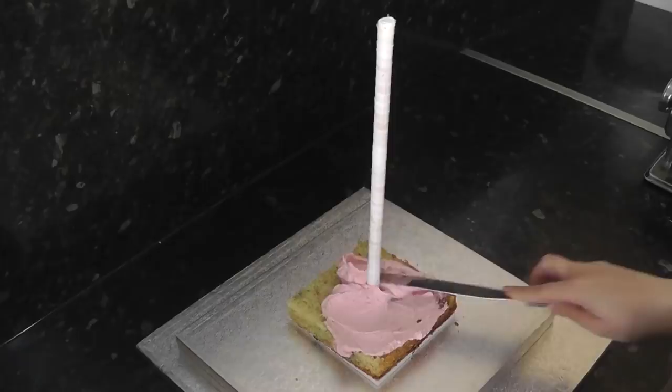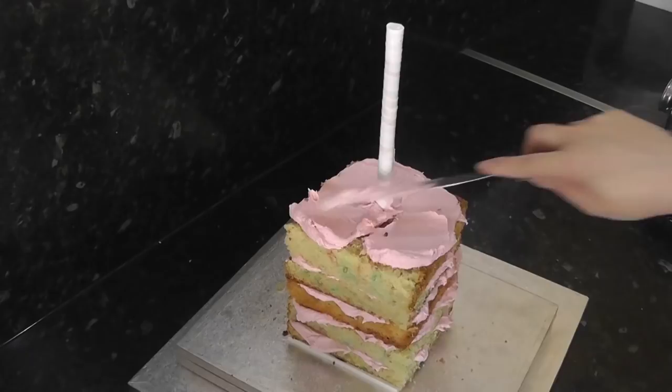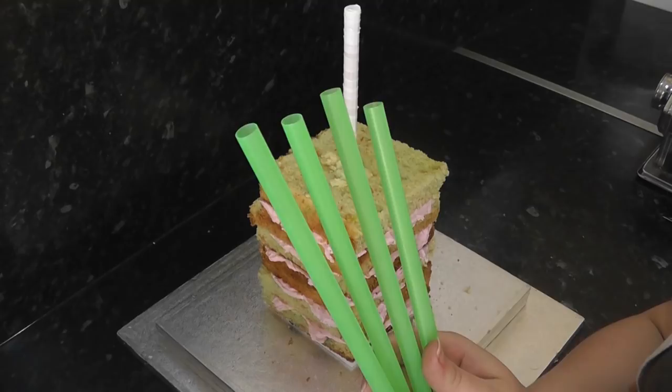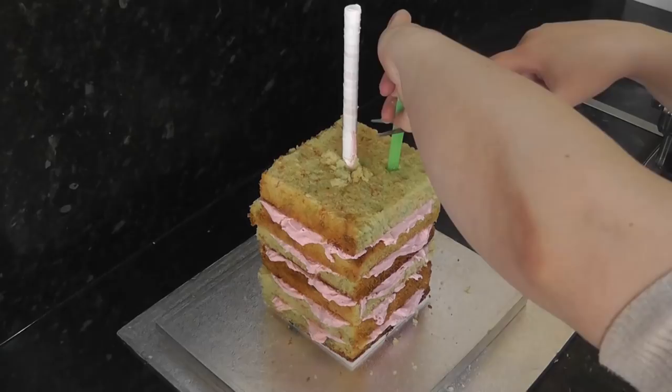Once you have a few layers on, you'll need some support. The cake will be soft and won't withstand the full force of the rest of the cake above it. You can support it with either dowels or bubble tea straws like I have here. Everything I use will be in the description box. Pop the straws down until they hit the base and cut them level with the cake.